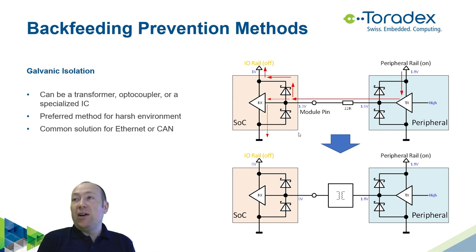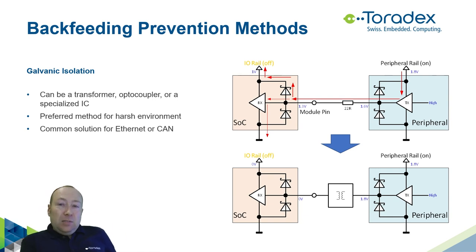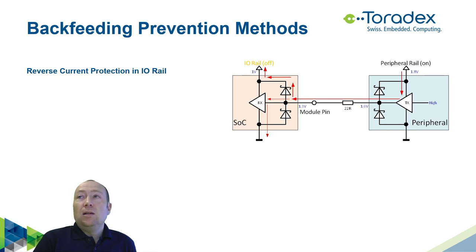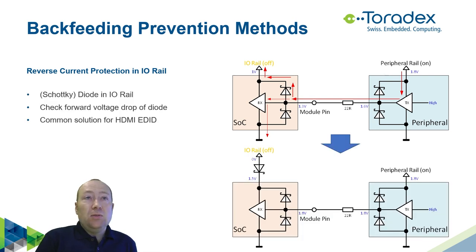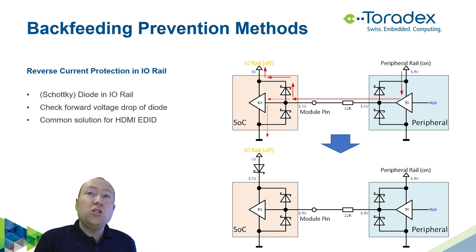Another common solution is galvanic isolation. This is a common approach for Ethernet — the magnetics prevent backfeeding. CAN transformers also prevent it. It's the preferred method for harsh environments and can be implemented using optocouplers or specialized ICs like digital isolators. You can also put a reverse current protection diode in the power rail — this is very common for HDMI EDID: the board must provide power to the screen DDC for reading the display's EDID, but this can backfeed, so a diode in that power rail blocks reverse current flow.